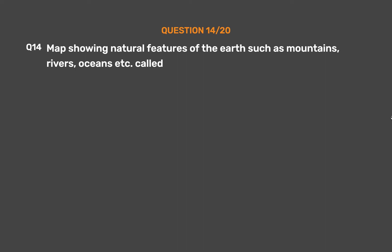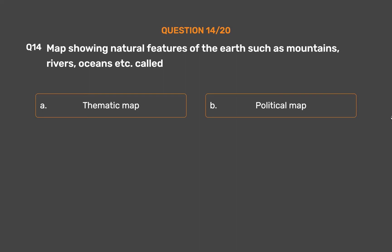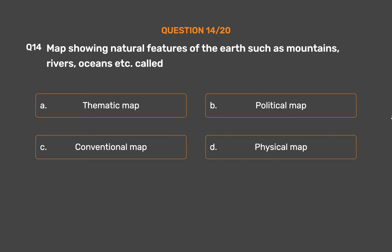Question number 14. Maps showing natural features of the earth such as mountains, rivers, oceans, etc. are called — Option A: Thematic map. Option B: Political map. Option C: Conventional map. Option D: Physical map.